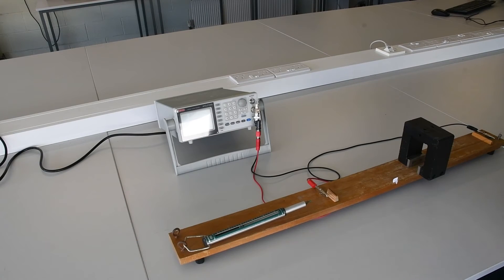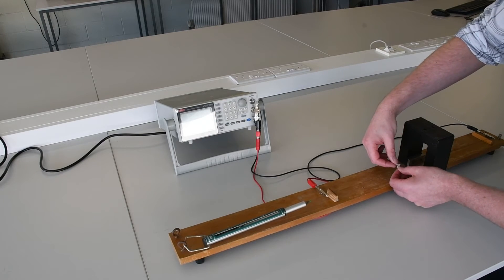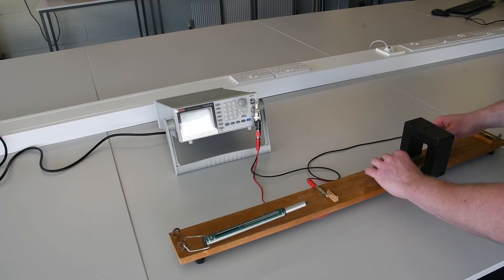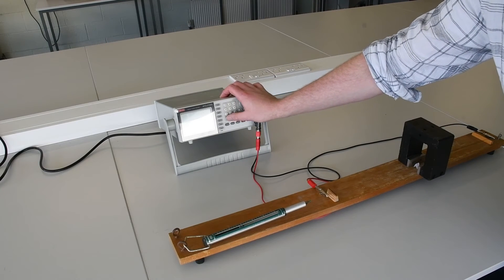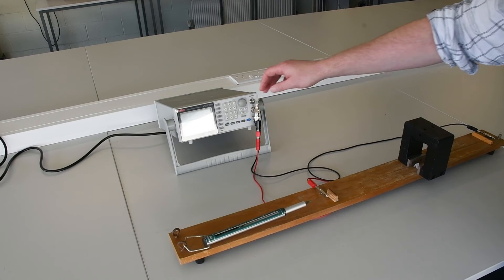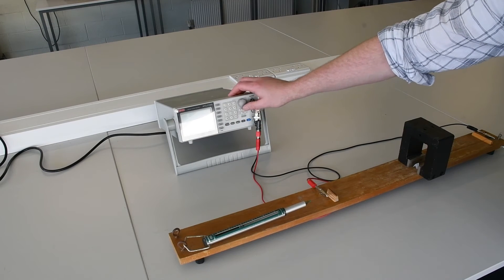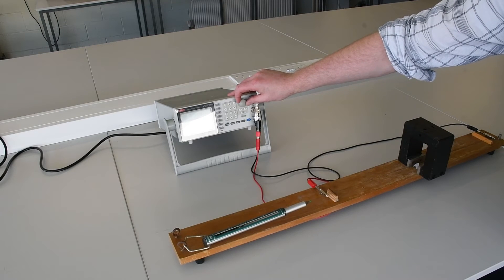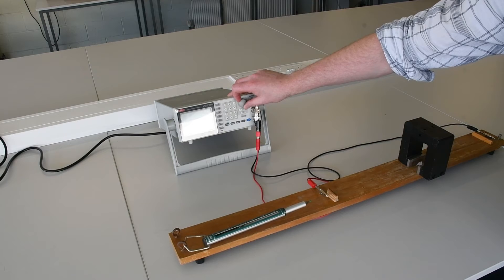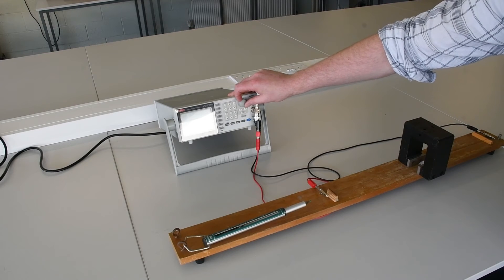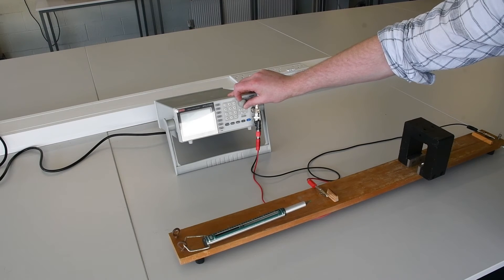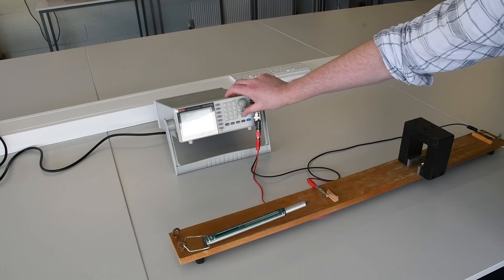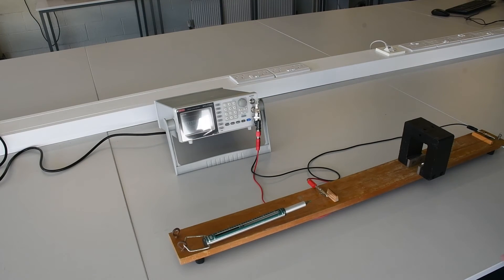Once we've recorded our frequency, we can then turn off the signal generator. We can replace the paper writer, turn down the frequency, and then slowly begin to increase it until we reach a maximum vibration again. We can then repeat this a few more times.